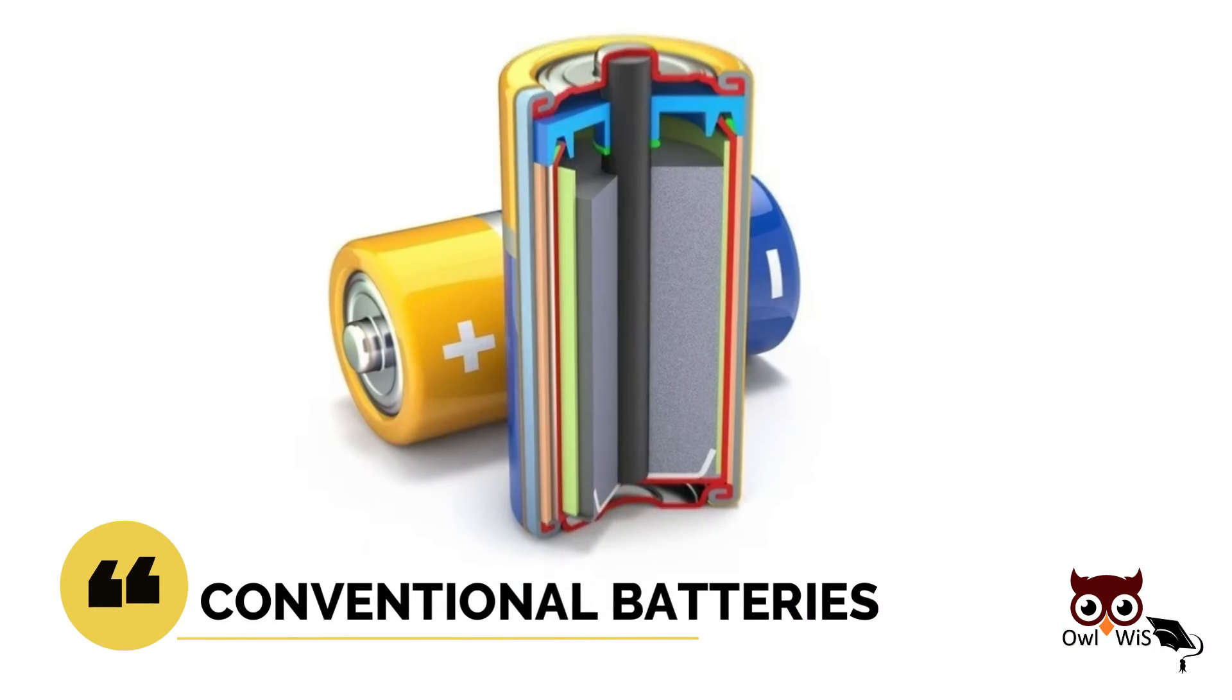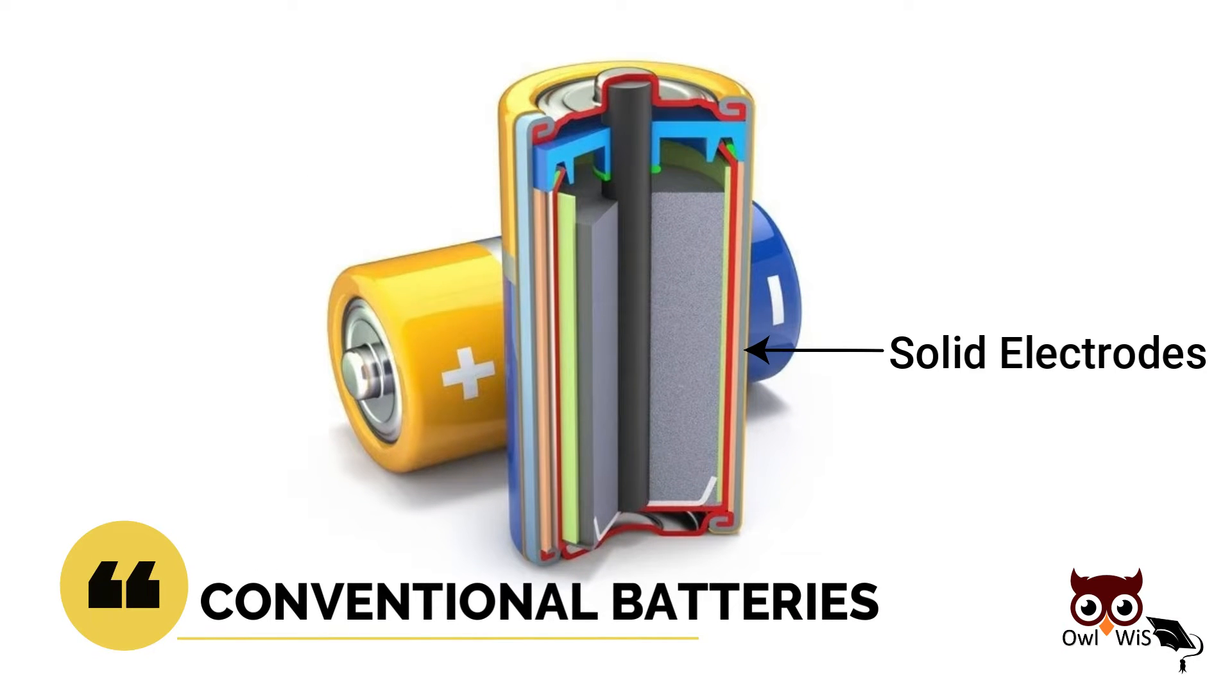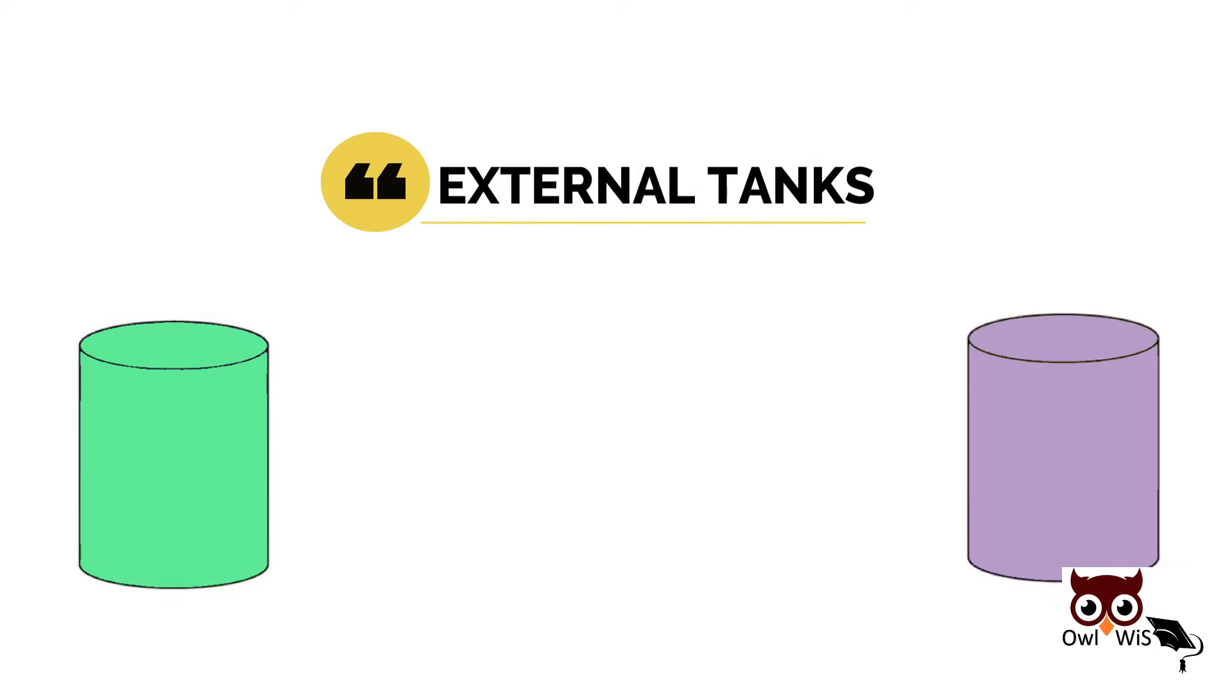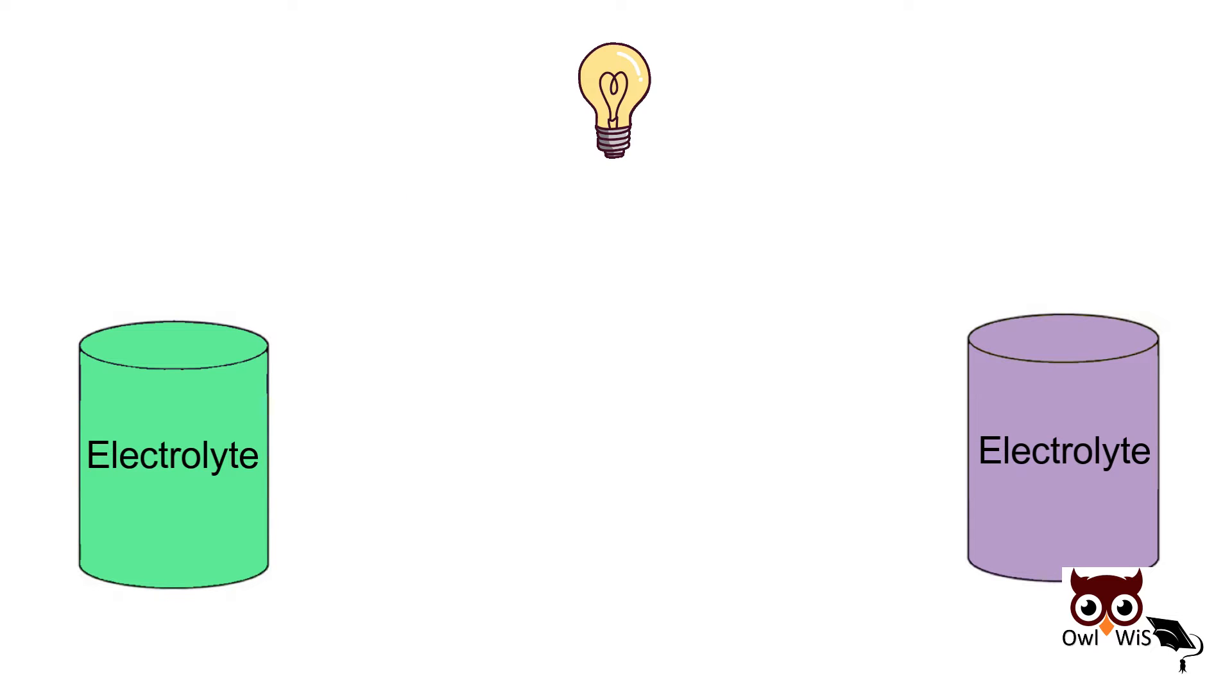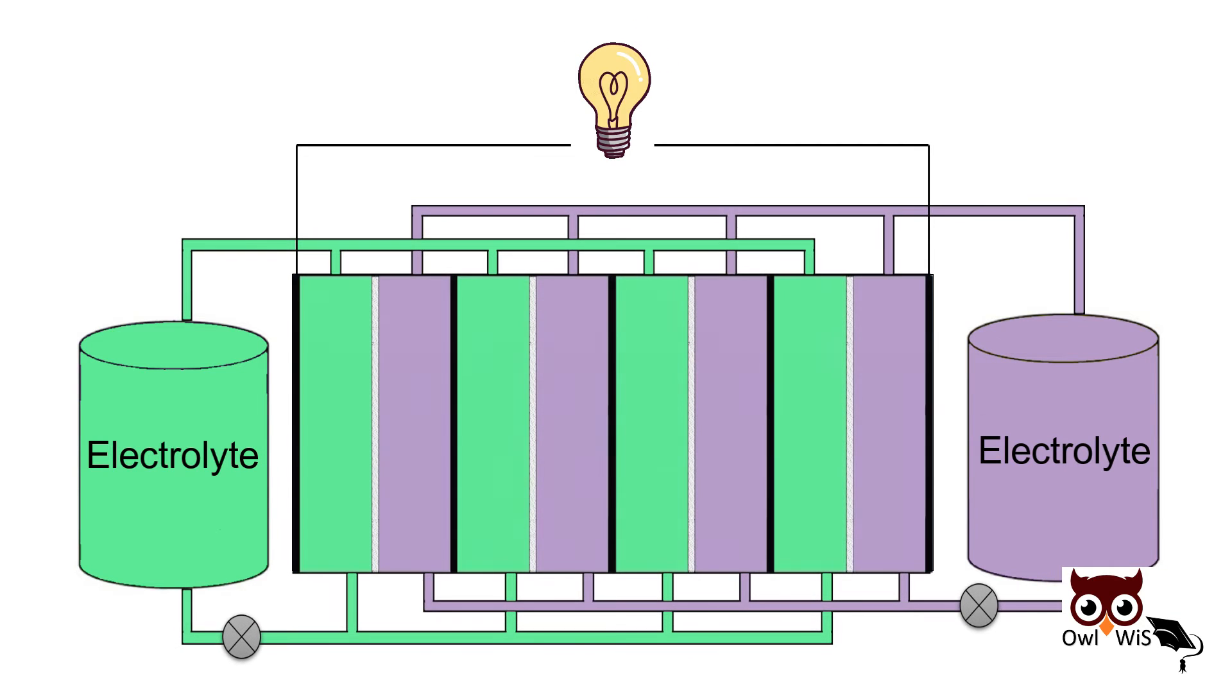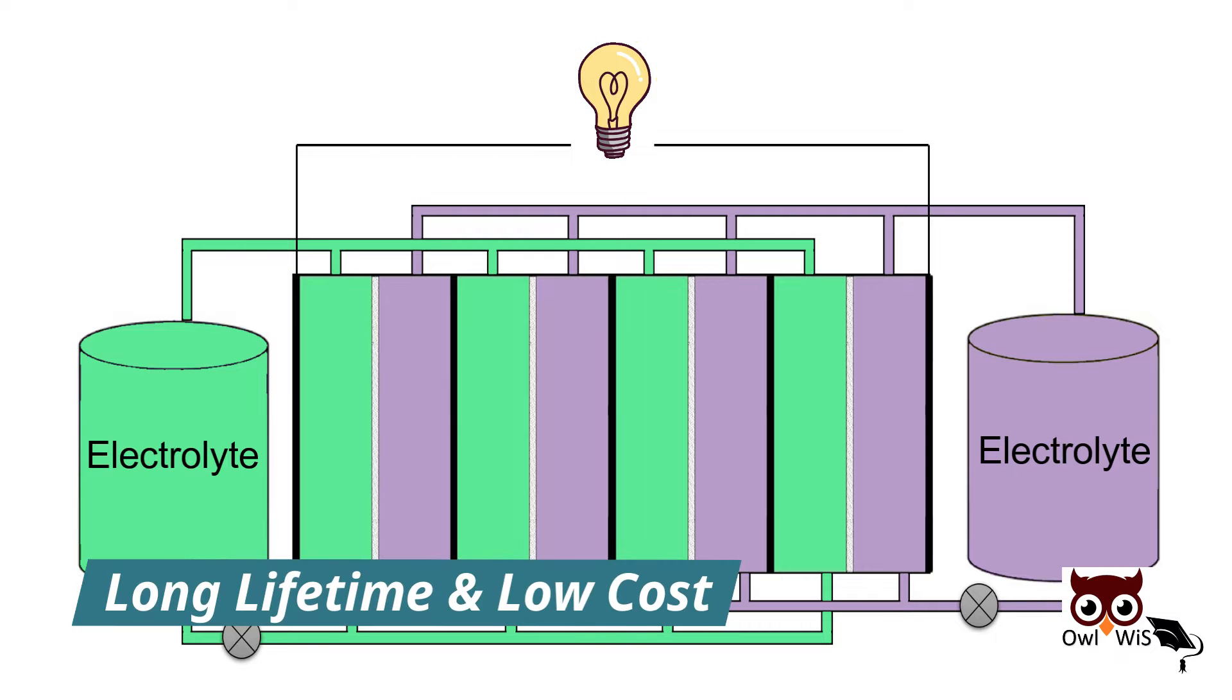Unlike conventional batteries which store energy in solid electrodes, flow batteries store chemical energy in liquid electrolytes which are kept in tanks outside the cells. This stored energy is converted into an electric current in a power module which is a stack of electrochemical cells. This design allows flow batteries to have long lifetimes and low cost.